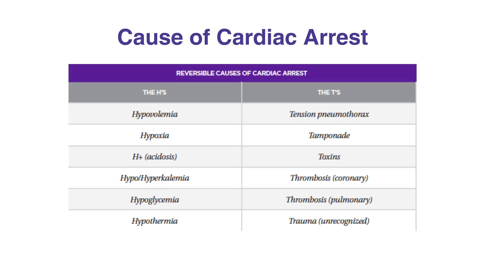The H's include hypovolemia, hypoxia, H+ acidosis, hypo- and hyperkalemia, hypoglycemia, and hypothermia.